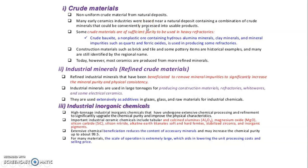Industrial minerals are refined materials. Refined industrial minerals have been benefited to remove the mineral's impurities, to significantly increase the mineral purity and physical consistency. They are used extensively as additives in glass and as raw materials for industrial chemicals.